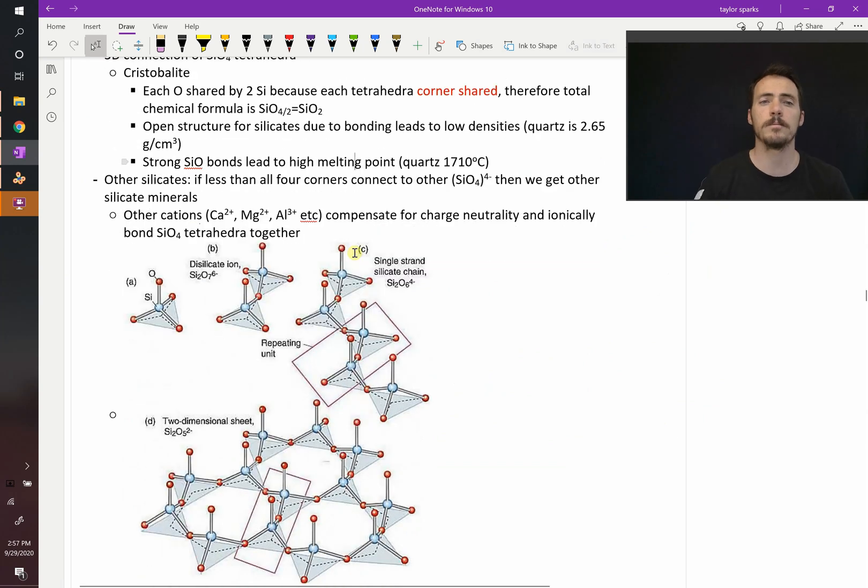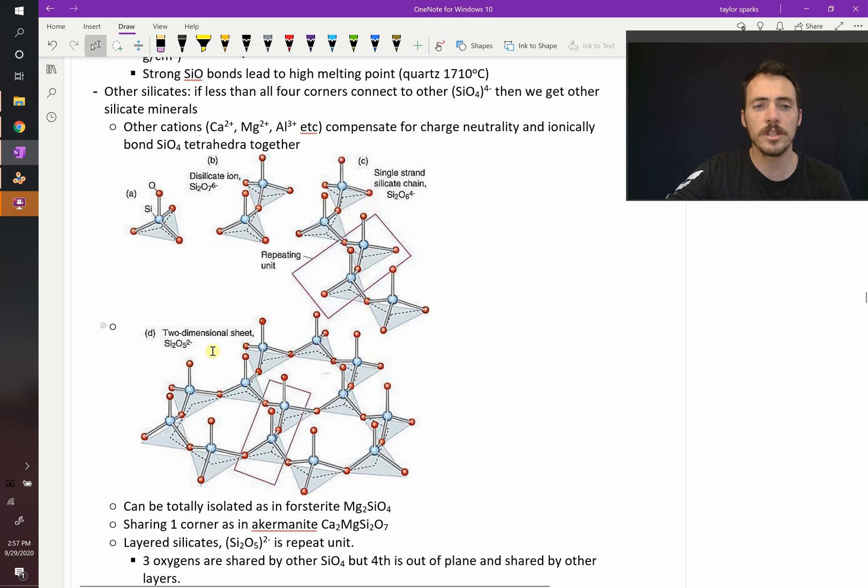Now, it's also possible for these silicate units, for these tetrahedral SiO4 units to not be completely shared by all four corners, but something less. For example, you can have an individual tetrahedra. You can have a disilicate ion, where two tetrahedra are shared by one corner. You can have a chain, like a silicate strand. This is an Si2O6 4- strand. That's the repeat unit there. Or they can be shared in a two-dimensional sheet, and this would now become an Si2O5 2- connection there. So we can see examples of this.